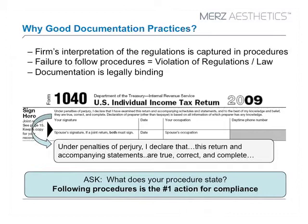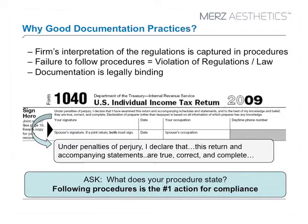Here's a form that many of you should be familiar with, being a U.S. citizen. This is the U.S. individual tax return form, and this is a form that is also legally binding. Basically here, where you're signing, you're saying: under penalties of perjury, I declare that this return and accompanying statements are true, correct, and complete. Because after you sign that, it is subject to audit.